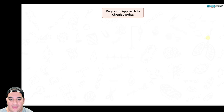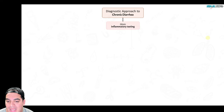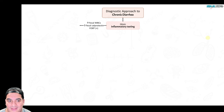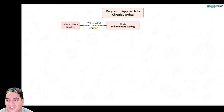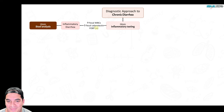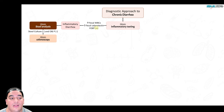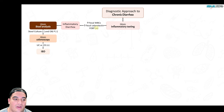For chronic diarrhea diagnostics — more than three loose stools per day for greater than four weeks — first determine if it's inflammatory. Get fecal WBCs, fecal calprotectin, and a fecal occult blood test (FOBT). If these are elevated or positive, it's inflammatory. Then get a stool analysis. If stool culture and ova and parasites are negative, it's likely IBD — get a colonoscopy to differentiate Crohn's from ulcerative colitis based on appearance and biopsy findings.